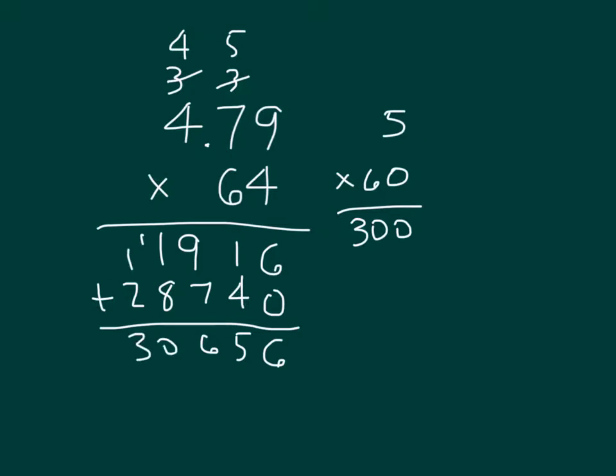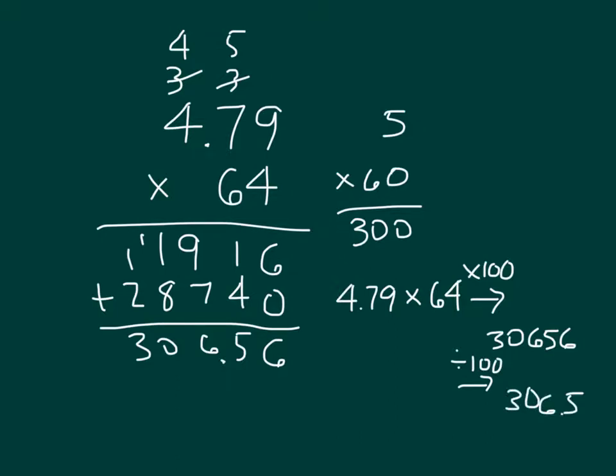Adding those two together, I get 30,656. Remember, I was dealing with hundredths, so I can place my decimal point there. This is our thought process. We have 4.79 times 64. If we had multiplied all of that by 100, we would have gotten 30,656. But then we divide by 100 to get 306.56 because we are working with hundredths there.